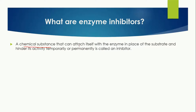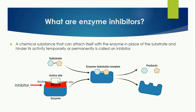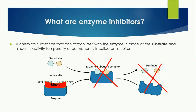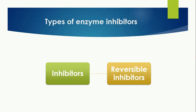Now, what are enzyme inhibitors? Enzyme inhibitors are chemical substances that attach themselves to the enzyme in place of the substrate. Instead of the substrate, the enzyme inhibitor binds to the active site and hinders its activity, maybe temporarily or permanently. They are called inhibitors because they inhibit the activity of the enzyme. At the active site, the inhibitor has bound, so the enzyme-substrate complex cannot form and there will be no product formation.